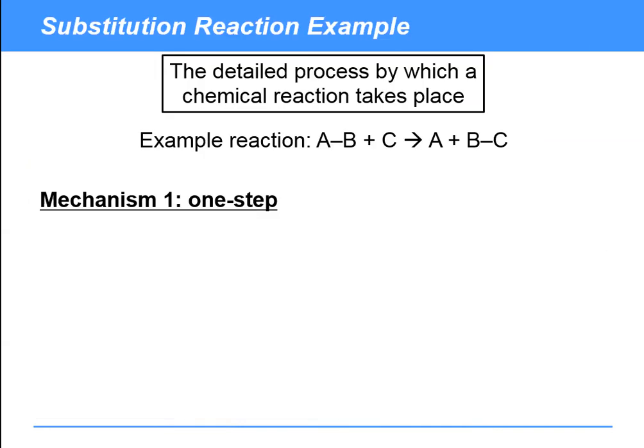We're going to start by just introducing this using an example of a substitution reaction. Now the mechanism of a reaction is defined here: the detailed process by which a chemical reaction takes place, usually given just as a series of equations describing the individual steps in the mechanism. These are usually known as elementary steps or just steps for short.